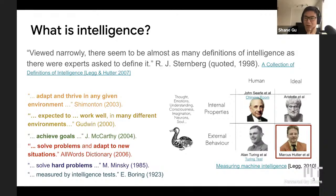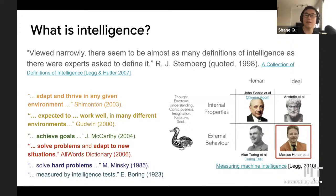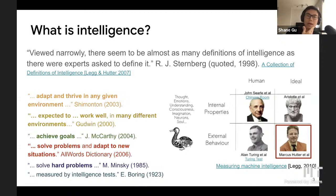Shane Legg, co-founder of DeepMind, gave a talk ten years ago where he categorized definitions into four quadrants: one based on internal versus external property, and another on human versus ideal. Internal means you define intelligence by required attributes; external treats it as a black box — if it behaves like intelligence, it is intelligence. The other axis asks whether intelligence must have human characteristics or can be idealized abstract qualities.